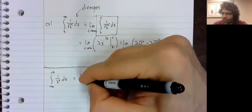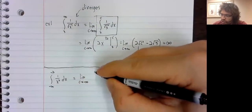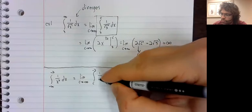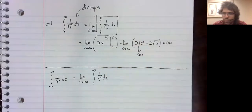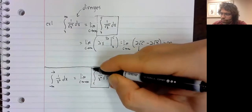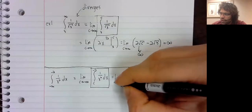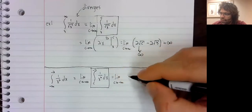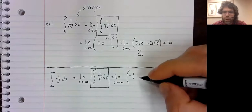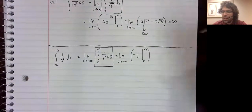Again, we make sure we use our proper notation. This is a limit, it should be written as such. And now, we'll compute this definite integral and see what we see. The antiderivative is negative one over x from c to negative two.